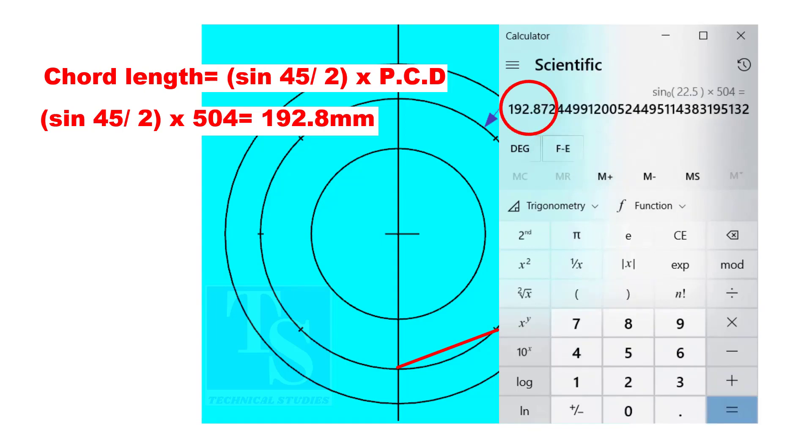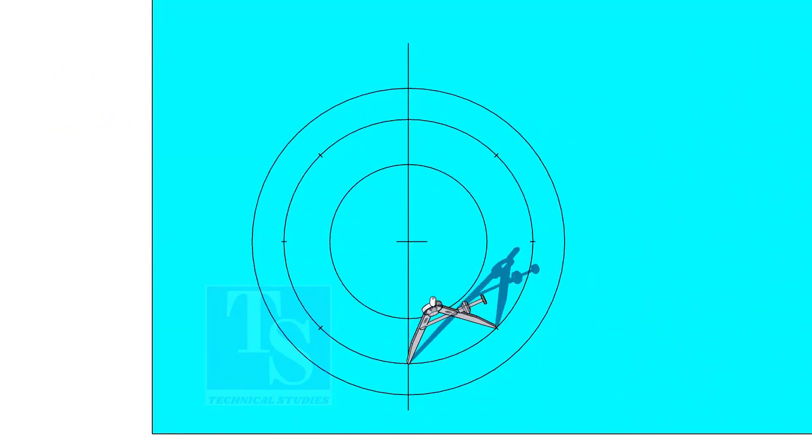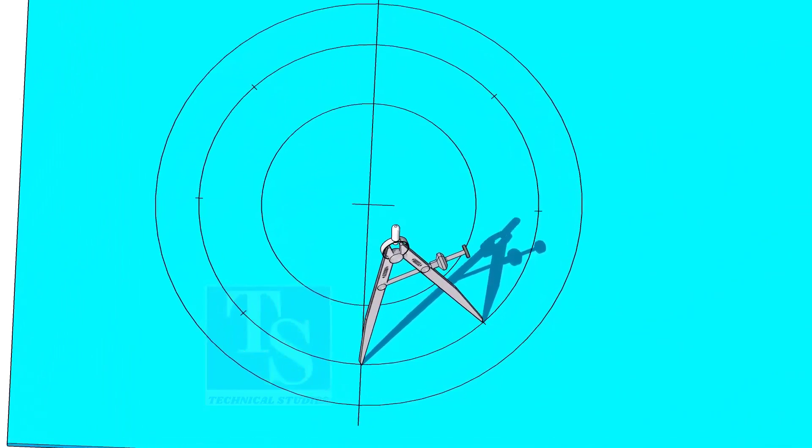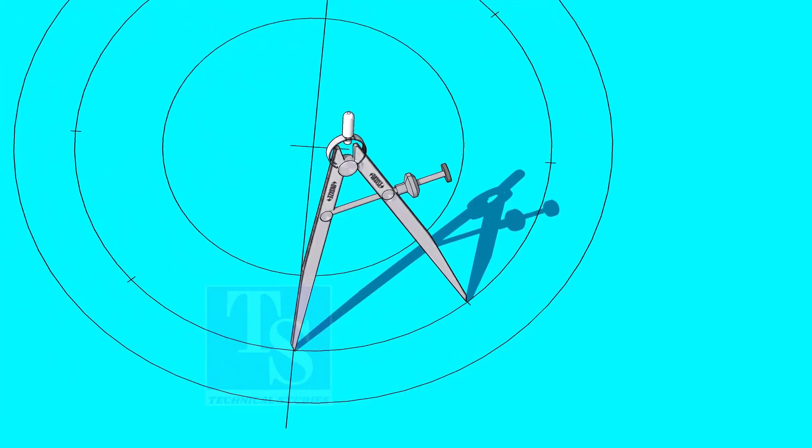The chord length is 192.8 millimeters. Adjust the divider to 192.8 millimeters and divide the PCD into 8 parts.